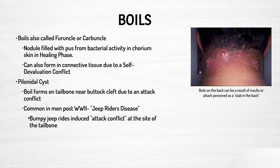The pilonidal cyst can form on the tailbone near the buttock cleft due to an attack conflict. These pilonidal cysts were very common post-World War II and they called it the Jeep Rider's disease because these Jeeps were very bumpy. This constant kind of attack that individuals were perceiving — the body perceiving an attack at the site of the tailbone — would cause this very interesting type of cyst.